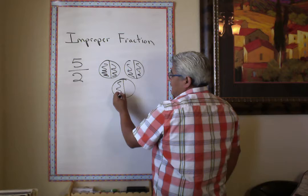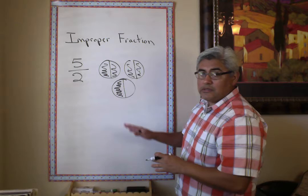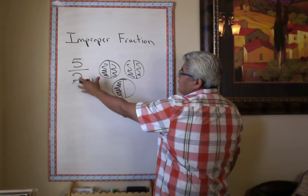So that means I've got one, two, three, four, and five. We used five pieces and they were cut into twos. Each whole was cut into twos. That's why it's called an improper fraction.